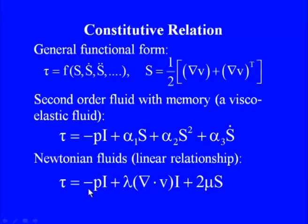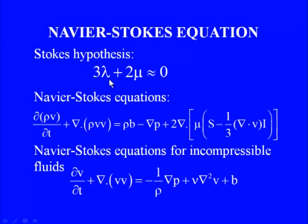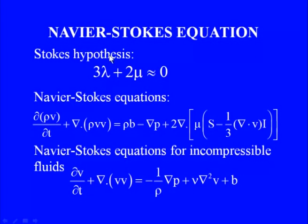For a Newtonian fluid, τ is a linear function of S, leading to the form: τ = −pI + λ(∇·v)I + 2μS, where λ is the first coefficient of viscosity and μ is the dynamic viscosity (second coefficient of viscosity), and p is the thermodynamic pressure. Stokes's hypothesis states that 3λ + 2μ = 0 for most fluids — this is related to the bulk modulus — simplifying the momentum equation significantly.